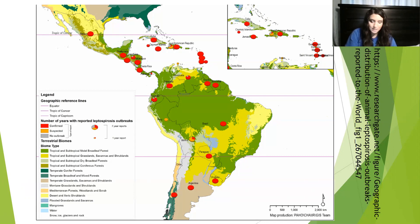Leptospirointerrogens cannot spread continent to continent because it's unable to infect birds, and the hosts that it does infect are typically territorial and non-migratory.